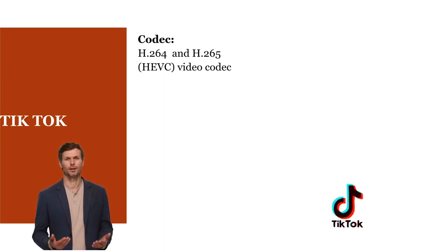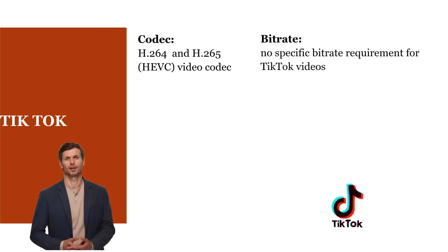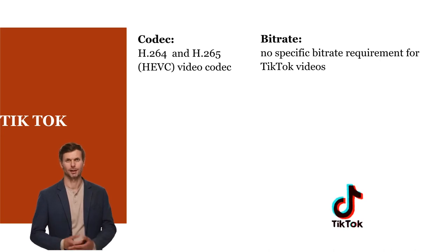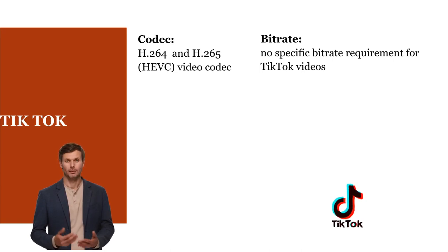While there's no specific bitrate requirement, it's recommended to use a bitrate that balances quality and file size. For 720p videos, a bitrate of around 2 to 4 megabits per second is typically sufficient, while 1080p videos may require a bitrate of 5 to 8 megabits per second or higher for optimal quality.